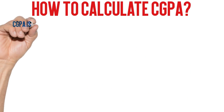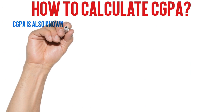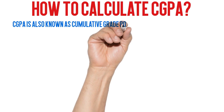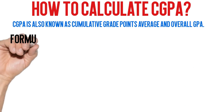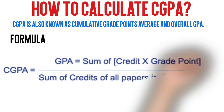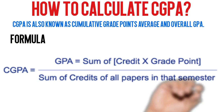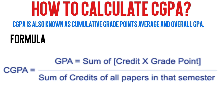After understanding GPA calculation, I am going to explain how to calculate CGPA. CGPA is also known as cumulative grade point average, or overall GPA. The formula to calculate CGPA is: CGPA equals the sum of GPA of all semesters multiplied by their credit hours, divided by the sum of credit hours of all courses.